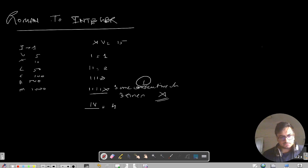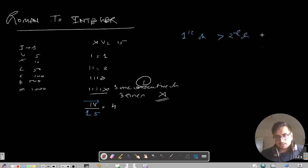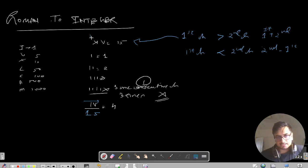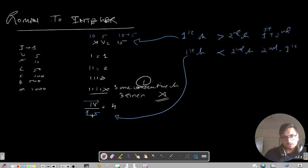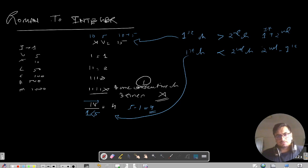The second rule: whenever you have a sequence of characters, I represents 1 and V represents 5. If the first character is greater than the second character, the result is first plus second. But if the first character is lesser than the second character, you return second minus first. For example: X is 10, V is 5 — first is greater, so 10 plus 5 gives 15. For IV: I is 1, V is 5 — first is lesser, so 5 minus 1 gives 4.